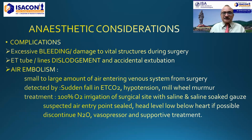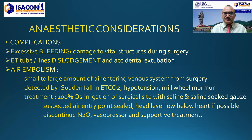Complications in posterior fossa surgeries are many. Excessive bleeding and damage to vital structures can occur, so adequate blood supply must be prepared. Endotracheal tube or line dislodgement and accidental extubation can occur during surgery. Air embolism is a significant risk — small to large amounts of air entering the venous system from the surgical site can lead to venous air embolism, detected by sudden fall in ETCO2, hypotension, and at a later stage, a mill-wheel murmur on auscultation. The treatment includes 100% oxygen, irrigation of the surgical site with saline-soaked gauze, sealing suspected air entry points, and lowering the head level below the heart if possible.